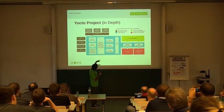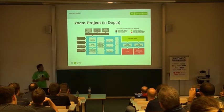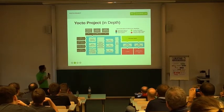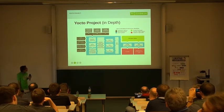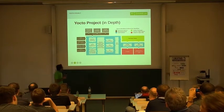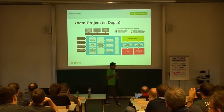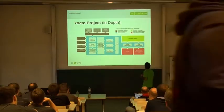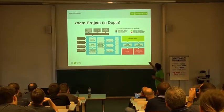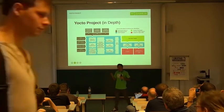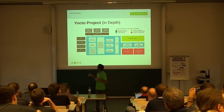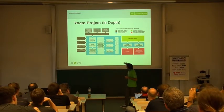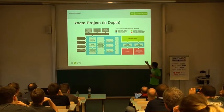It also gives you three possibilities for package management. The default is always RPM, then you have Debian, and IPK is also a Debian-based package. So it gives you three possibilities for your own package manager. You also have different types of images — in some images you may need X server, for something else you don't need one. The beauty is, you can customize.